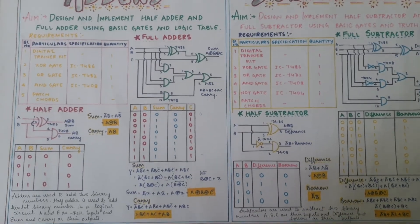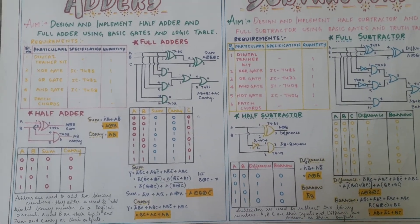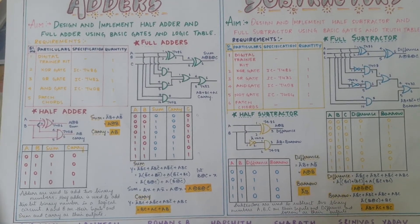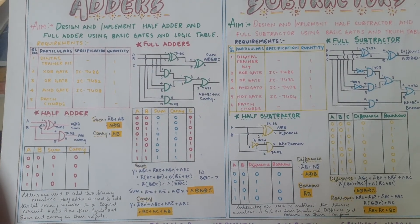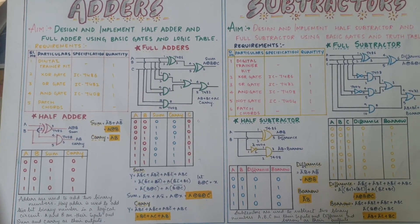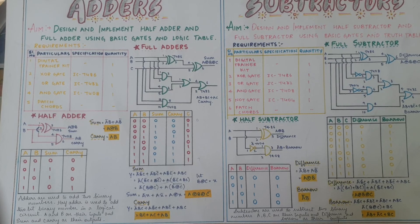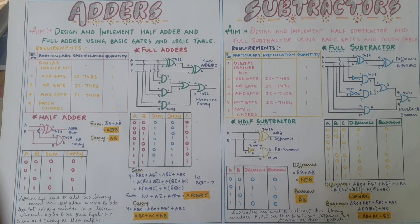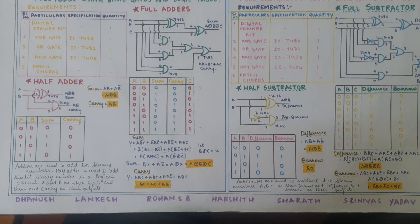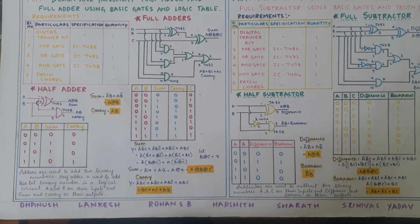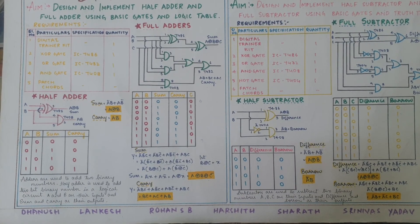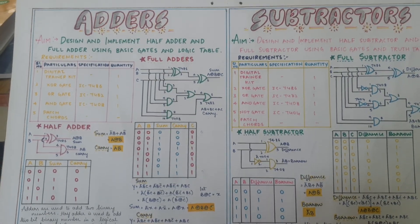In summary, in this experiment we have studied adders — both half adder and full adder — and subtractors — both half subtractor and full subtractor. The construction of the digital circuit will be explained in the next video. I thank all the students who prepared this wonderful chart and extended their support in making this video.